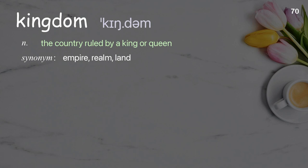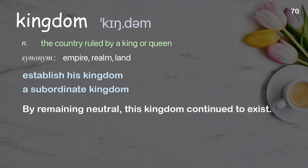Kingdom: The country ruled by a king or queen. Examples: establish his kingdom, a subordinate kingdom. By remaining neutral, this kingdom continued to exist.